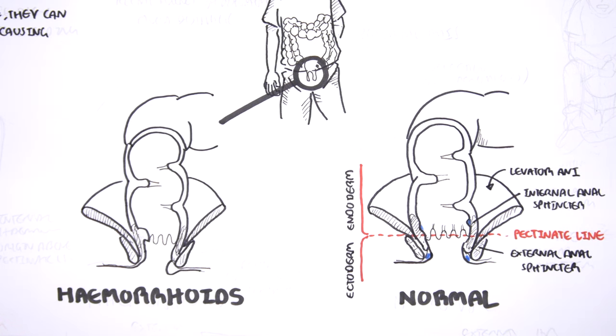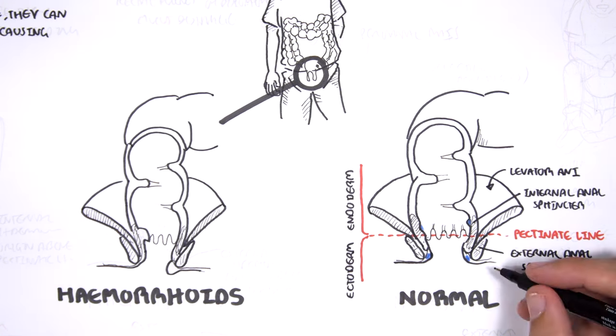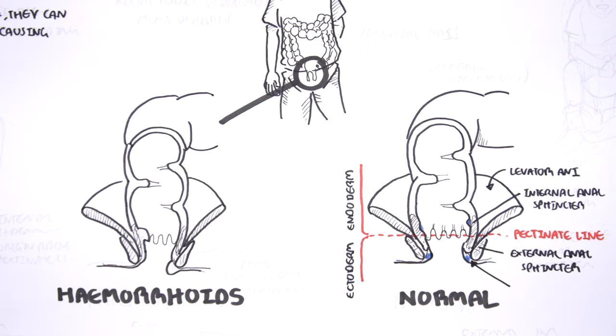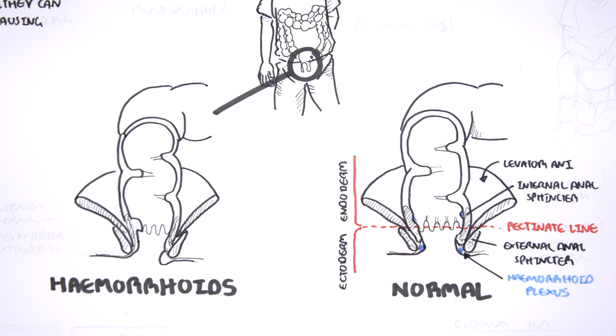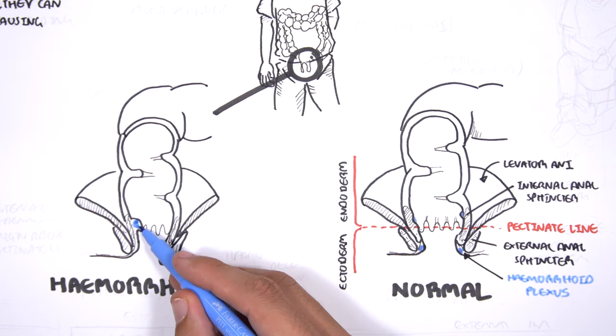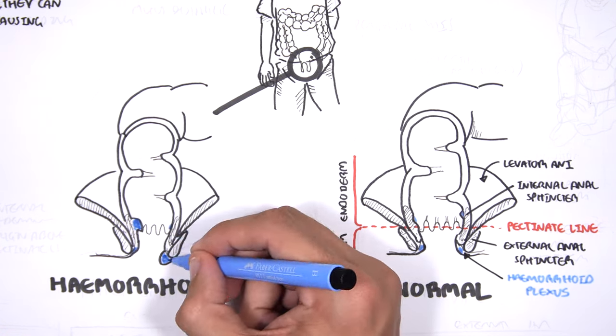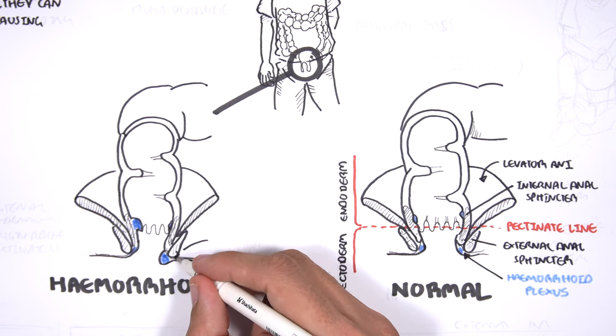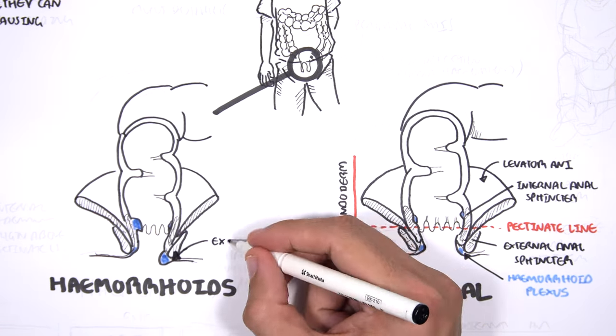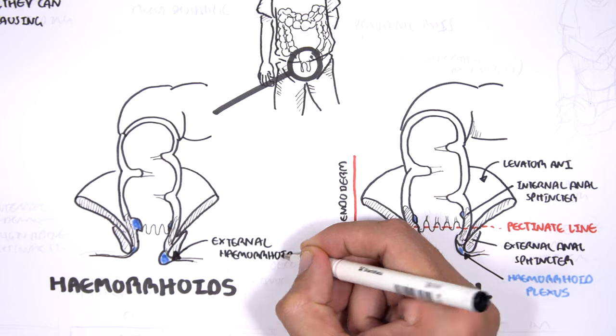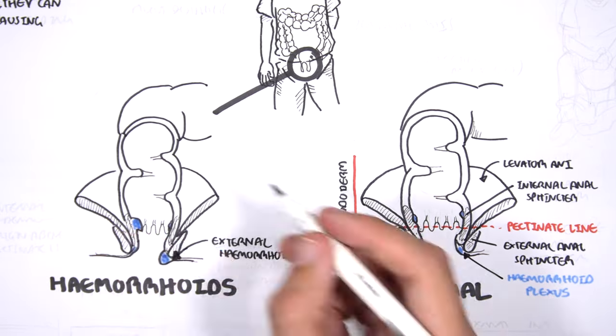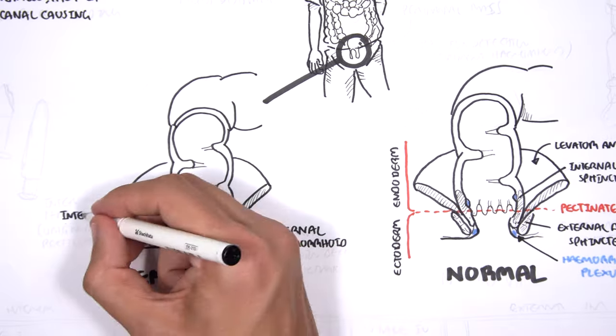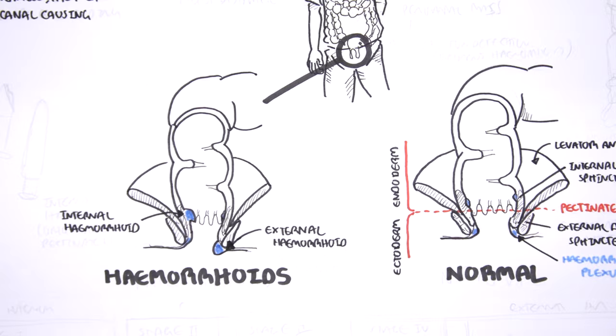Hemorrhoid plexi or plexuses are here. There is an external and internal hemorrhoid plexus. These are normal anatomical structures. In the condition known as hemorrhoids, these plexi enlarge and can cause some serious discomfort. The enlargement can be from external hemorrhoids or from internal hemorrhoids, and internal hemorrhoids are located above the pectinate line.